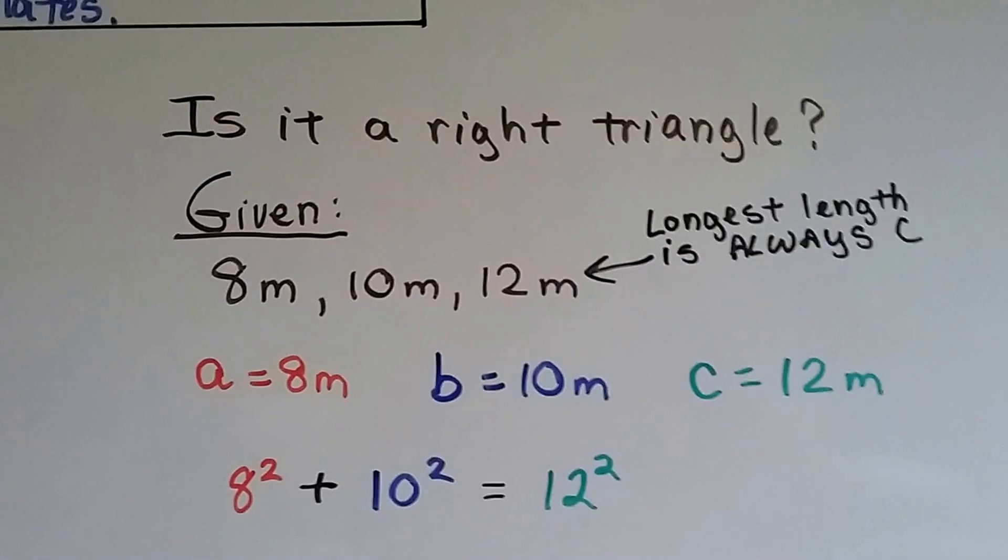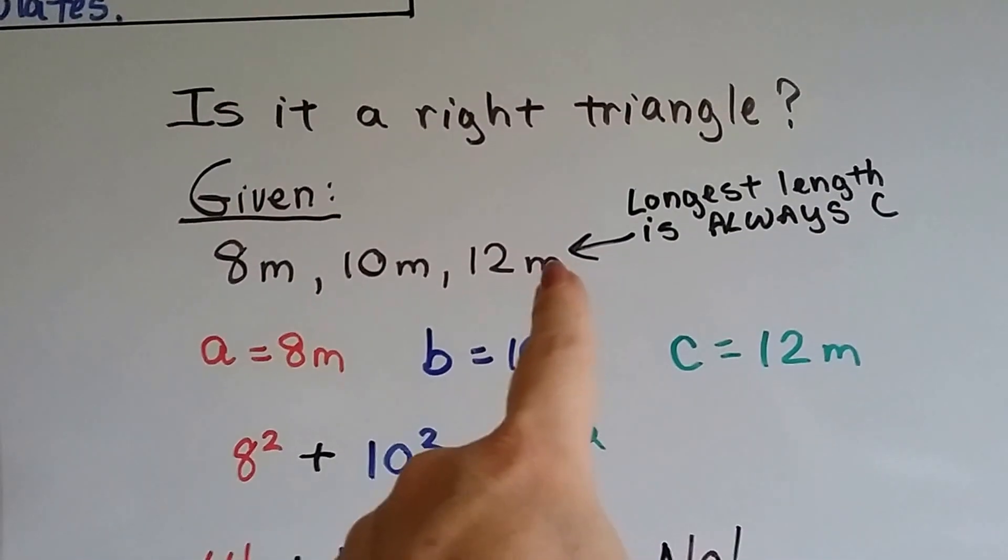Let's check another one out. Is it a right triangle? Now remember, the longest one is always c, and that's 12 meters.